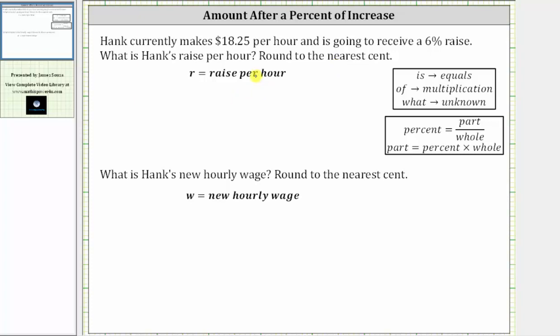To find the raise per hour, we need to find 6% of $18.25. Let's write this as a question.